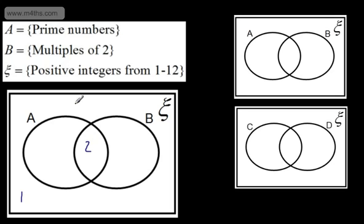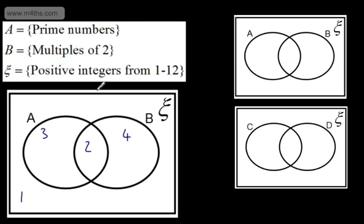Let's take 3. 3 is a prime number, but it's not a multiple of 2, so we'll put it solely in A. 4 is a multiple of 2, but it's not a prime number, so it would be part of B only. 5 is a prime number, so it's a member of A, but it's not a multiple of 2, so it's not a member of B.